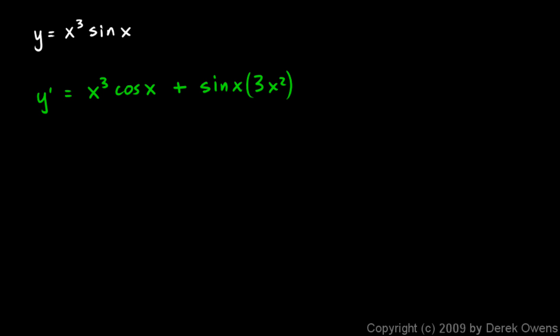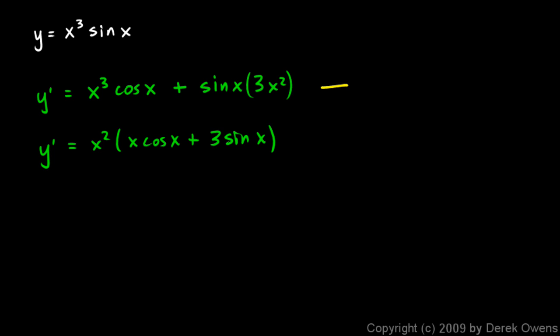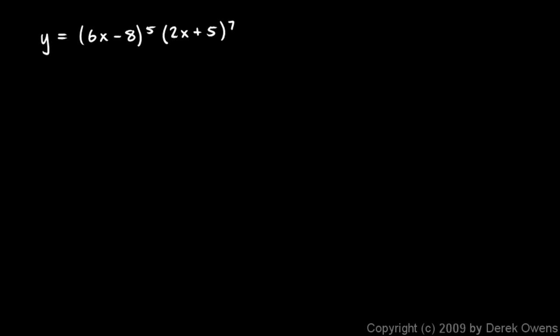And that's it — you're done. Now if you want to, you can factor a little bit. There's an x cubed and an x squared, so we could factor out an x squared from each term to get x squared times (x cosine x plus 3 sine x). It's good to be able to change between forms because on a multiple choice exam, one of the answer choices might be the factored form, so you need to know they're equivalent.